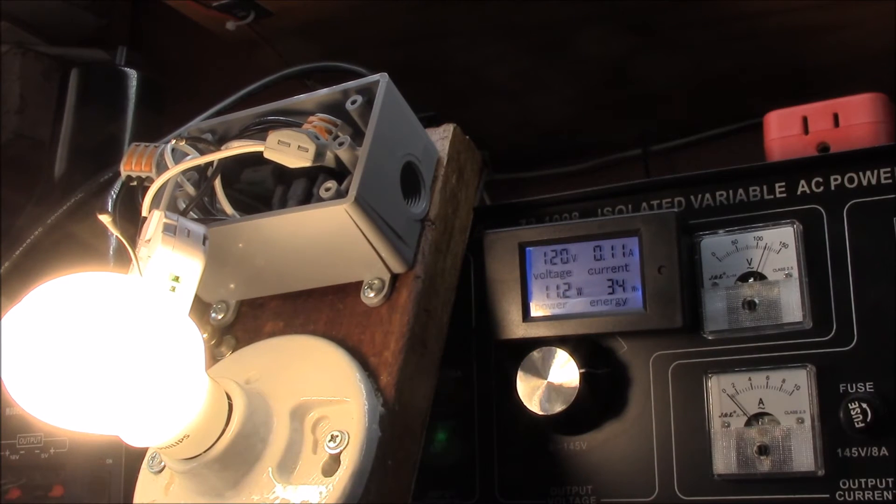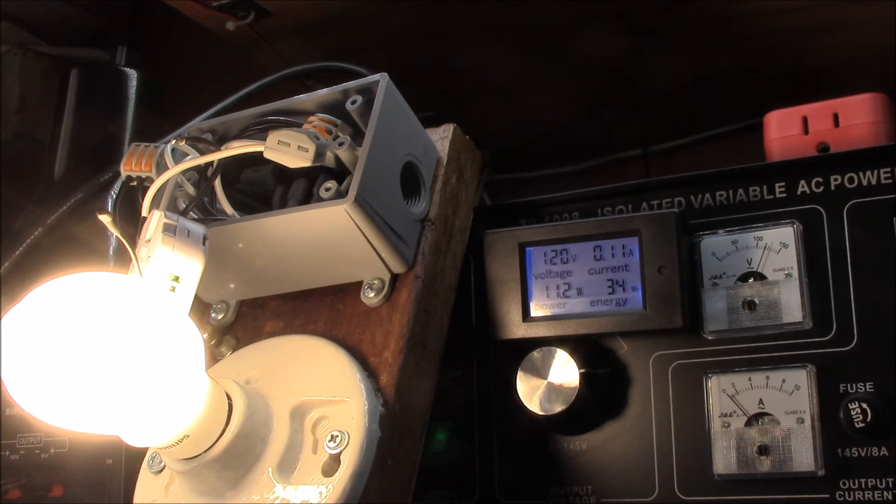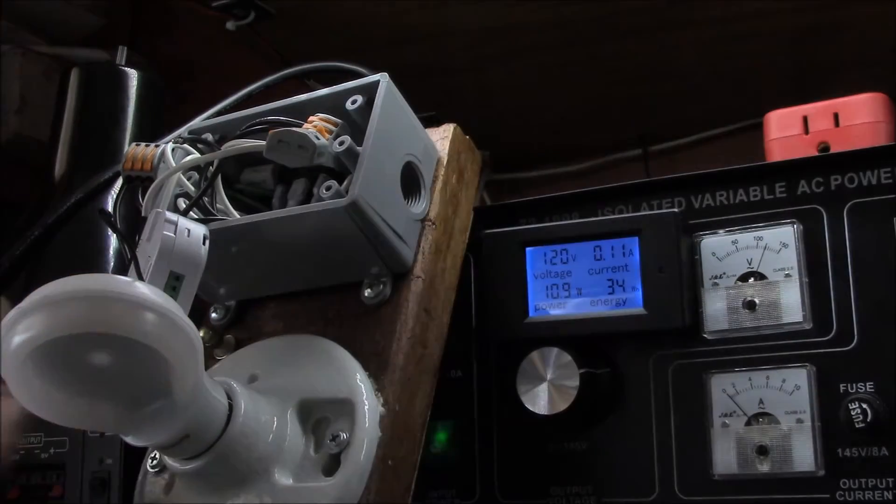And that was eleven point nine with the dimmer. So using a light dimmer with your bulb adds that six to seven tenths of a watt to the energy consumption. So there is a slight cost to using a dimmer with the bulb.